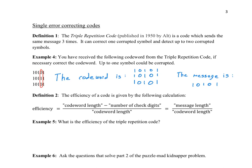Another way to measure the efficiency is to take the codeword length and subtract the number of check digits. The check digits are anything extra — all of these in this context are check digits because they're all extra to the message. These 10 digits are just added to make sure that the message gets across correctly. So what would the efficiency of the triple repetition code be? It would be a one-third type of efficiency.